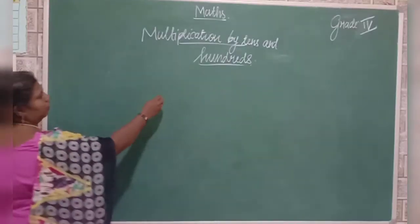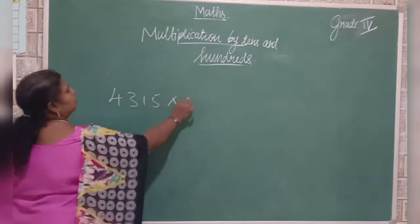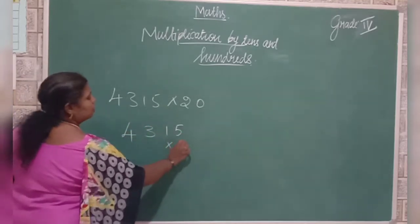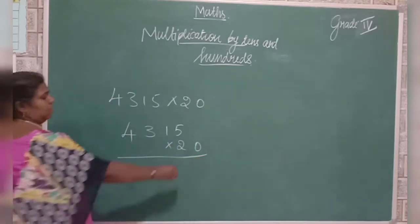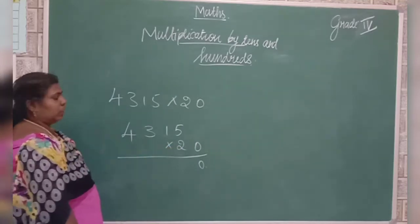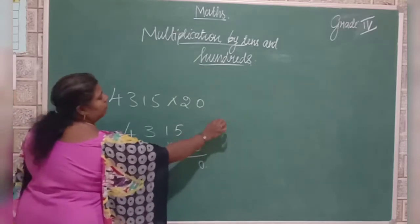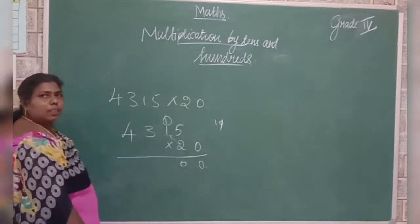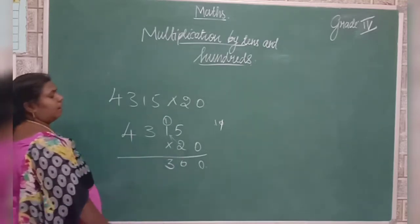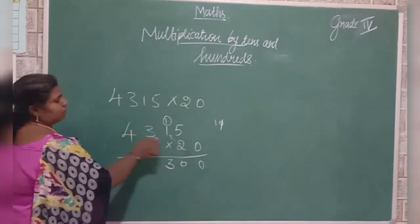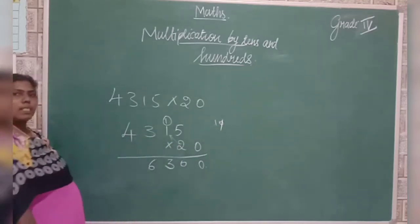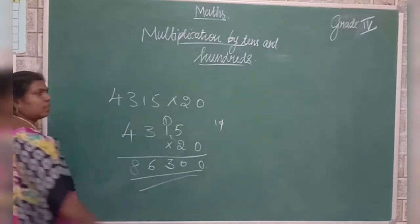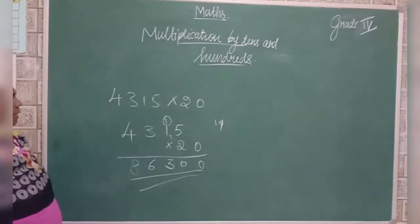Here, we used only 10. Now see: 4315 into 20. How can you multiply this? You can use 4315 into 20 — write this zero as it is, no change. Then use the second table. Two times 5 is 10: zero here, carry 1. Two times 1 is 2, plus 1 is 3. Two times 3 is 6. Two times 4 is 8. So this is the answer — multiplication by 20.